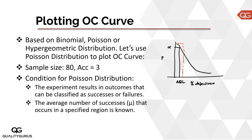This is the RQL, and this is beta. The probability at AQL should be 1 minus alpha — since alpha is 5%, that value is 95%. We also noted the ideal curve shown in red. Now what we want to do is actually draw one of these OC curves based on a sampling plan.